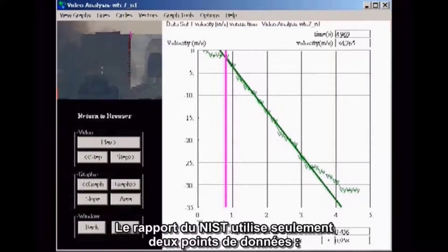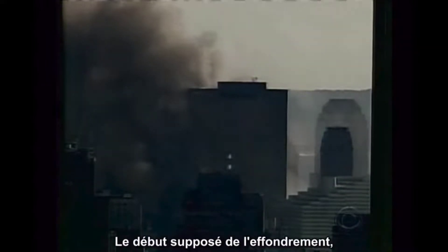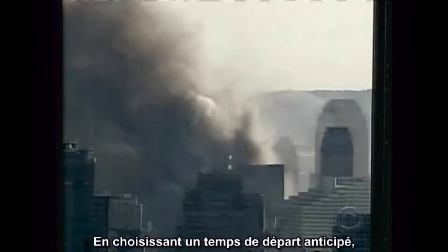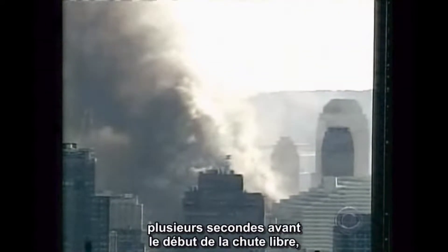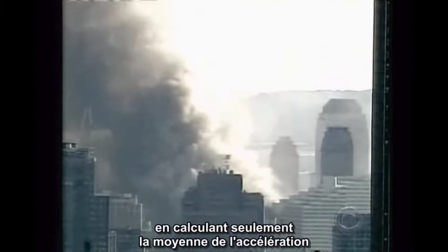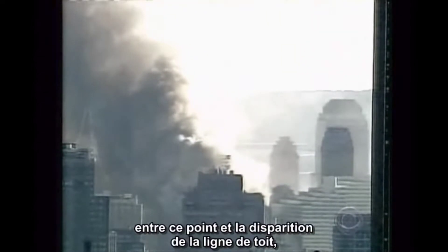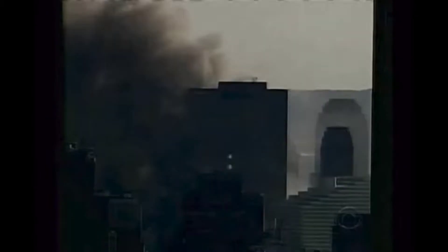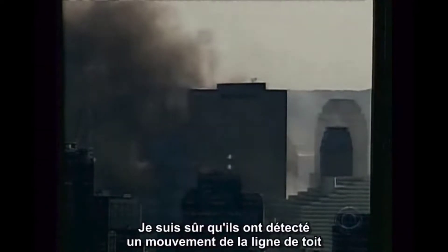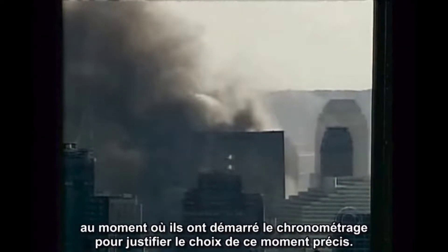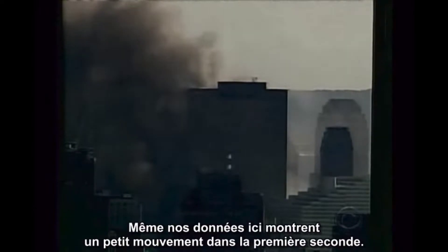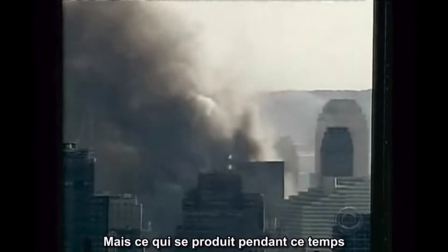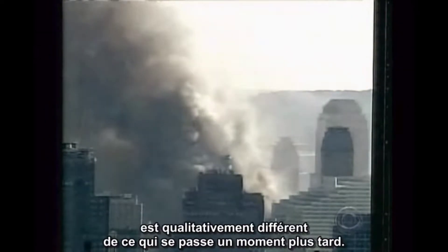The NIST report uses only two data points, the supposed start of the collapse and the time the roofline disappears from view. By choosing an early starting time several seconds prior to the onset of freefall and computing only the average acceleration between that point and the disappearance of the roofline, they gloss over everything that happened in between. I'm sure they detected some movement of the roofline at the point where they started the clock. There's a rationale for choosing that point. Even our data here shows a tiny amount of motion in the first second.